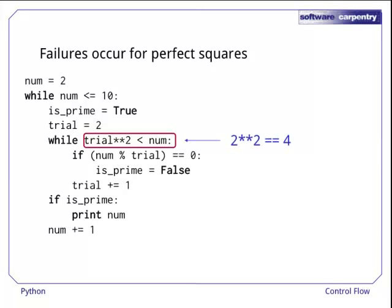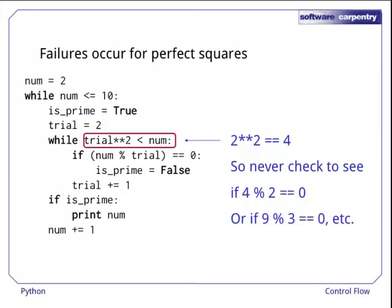2 squared is 4, but since the loop condition is less than, we never actually check to see whether 4 can be divided by 2, or whether 9 can be divided by 3, and so on. The condition should be less than or equal.